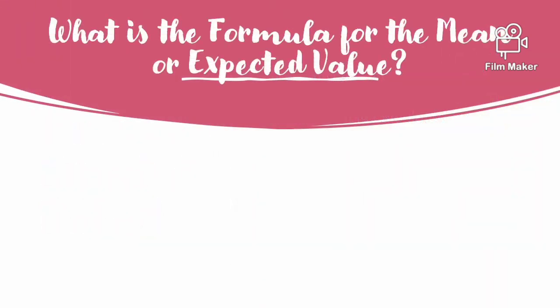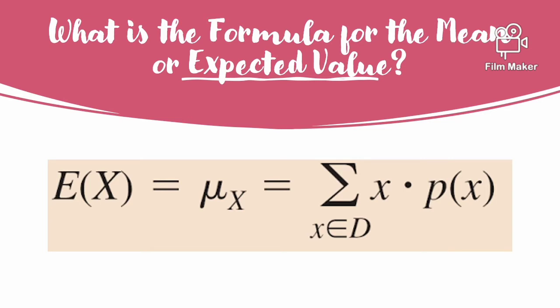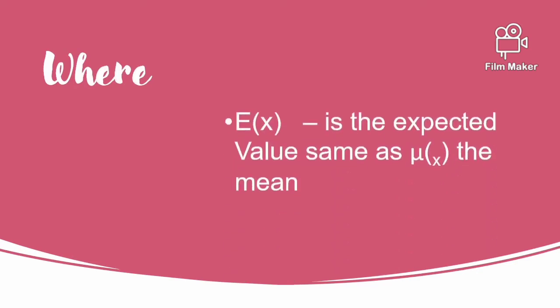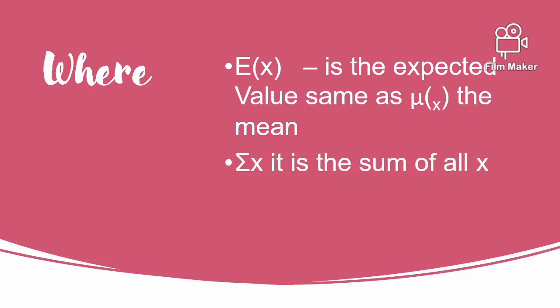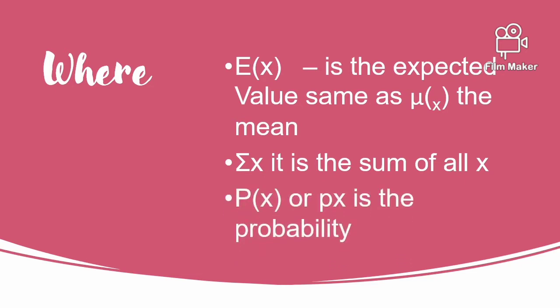The formula for the mean or expected value uses P(x) as the expected value, where μx is the mean. The summation of x is the sum of all x values, and P(x) is the probability of each outcome.